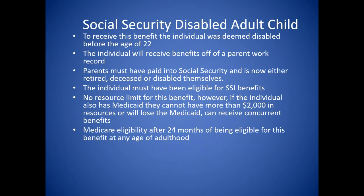For Social Security disability adult child or off your own benefit, your Social Security check will not fluctuate when you're earning money — it stays the same. You might get a cost-of-living raise annually. However, individuals need to watch how much they earn. If they go over $1,300 a month in earned income before taxes, they can be considered meeting substantial gainful activity and eventually lose their Social Security check, because Social Security considers them no longer disabled.